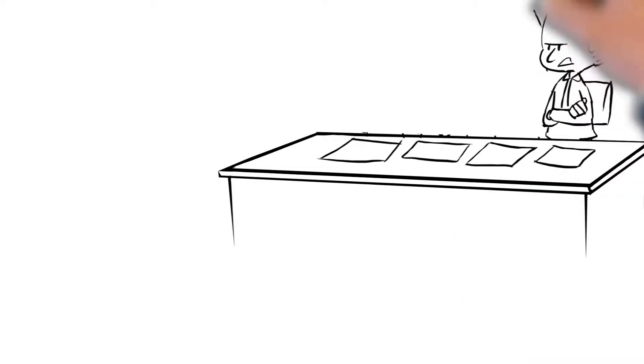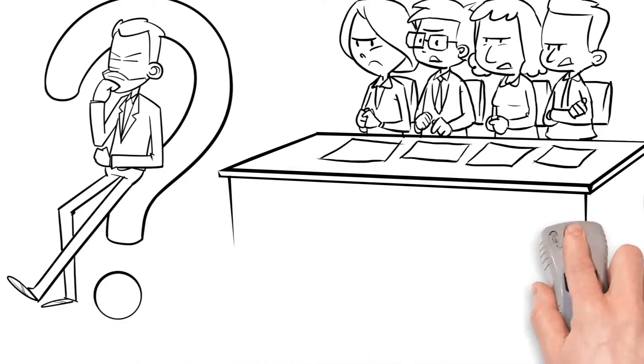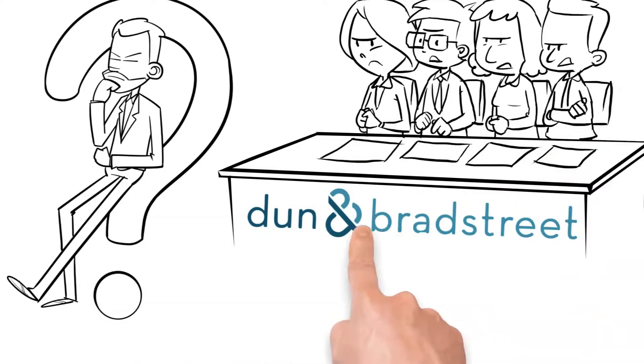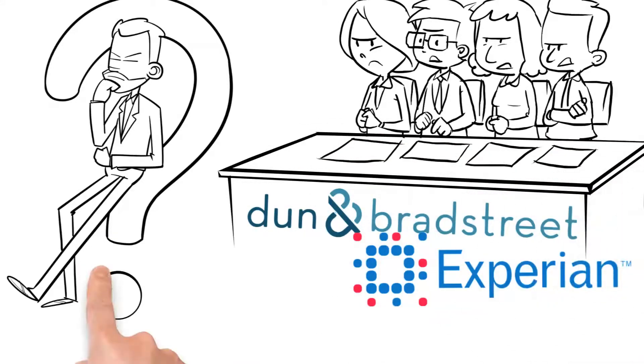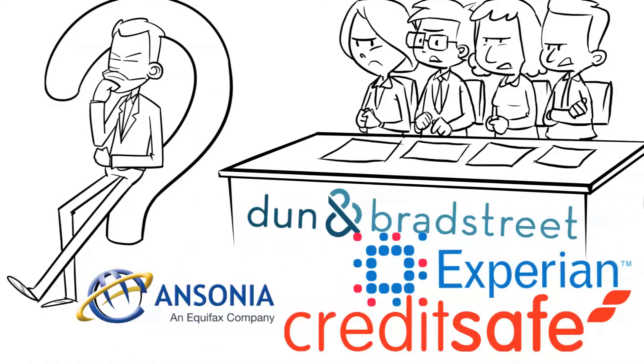There are a variety of business credit bureaus that collect and manage information about your company. D&B, Equifax, Experian, and SONIA Credit, CreditSafe are examples of some of the more well-known repositories of business credit information.